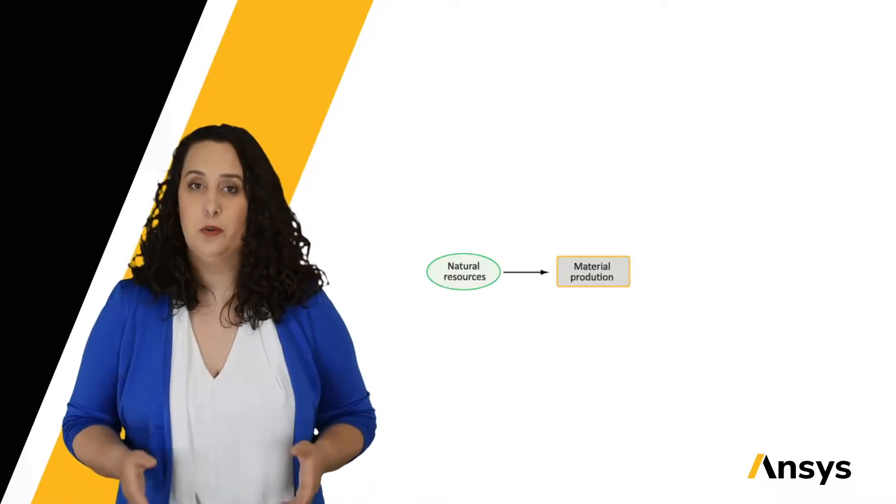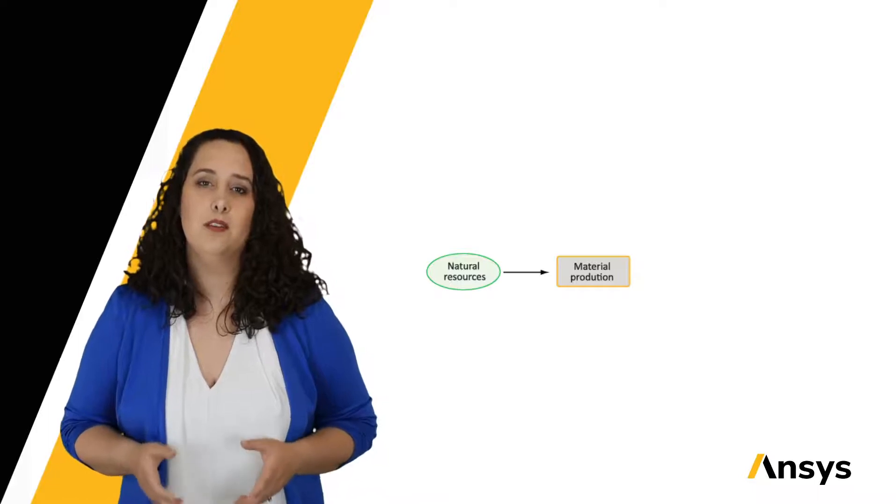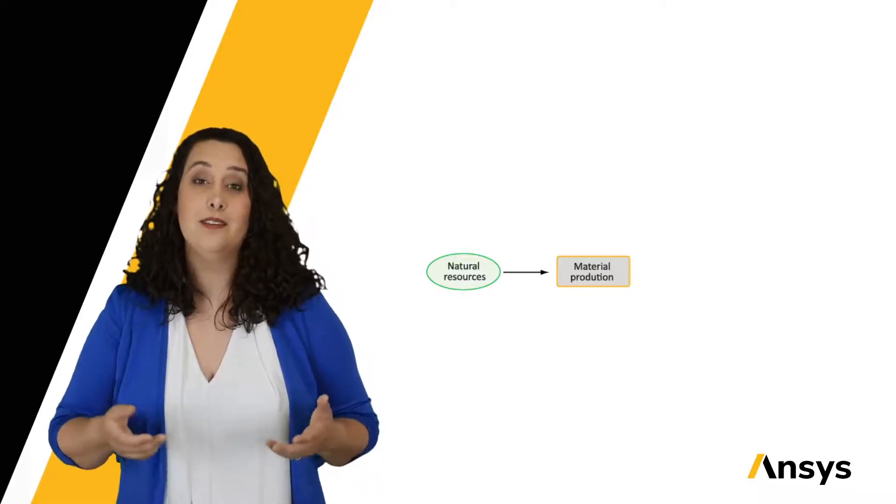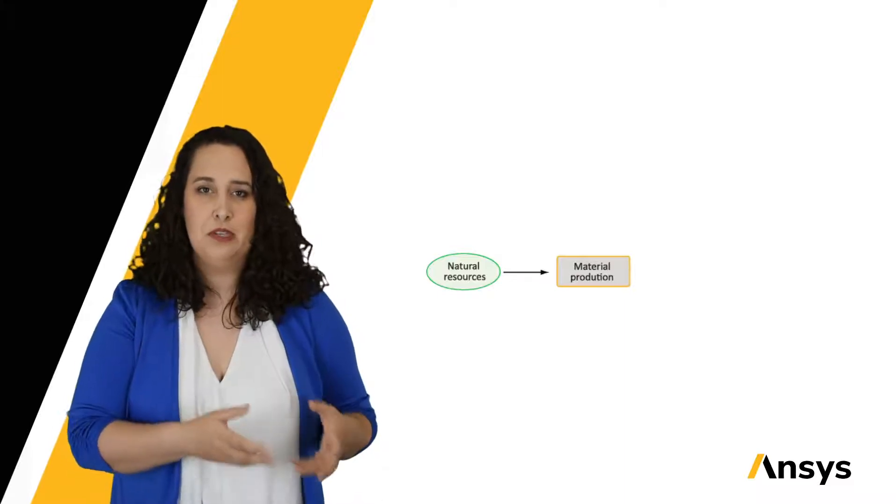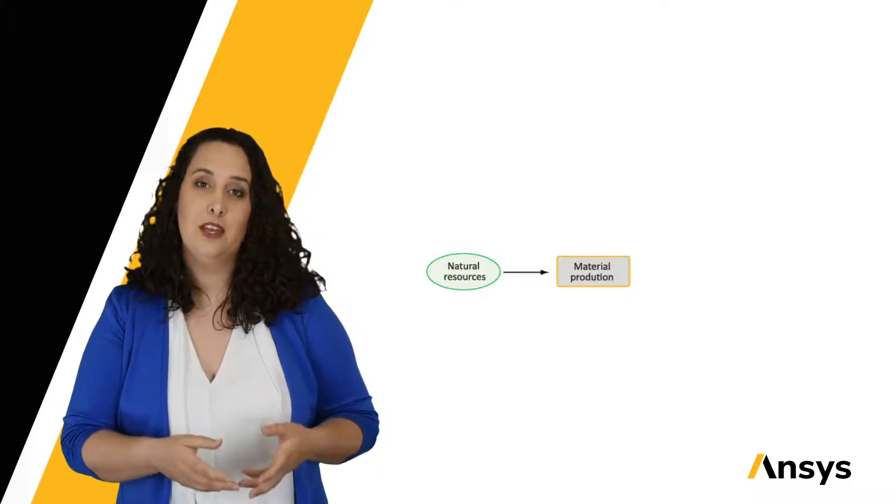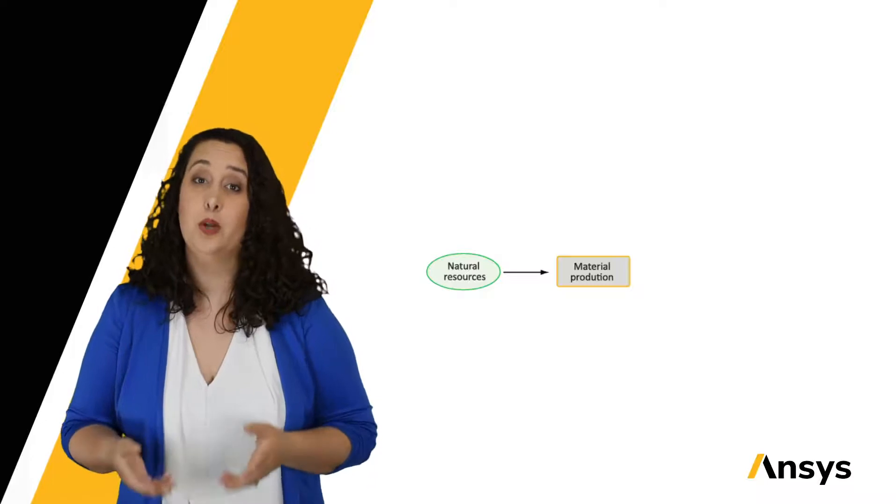First, let's start by defining what a material lifecycle looks like within a product, and this goes beyond just the product being in service. We start with material production. If we think back to lesson one, this is the same as stage one, where we're going from our natural resources, our raw material, and we're processing it to get to our starting material in usable form.